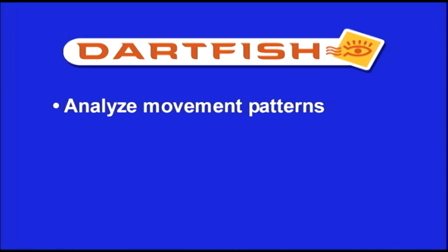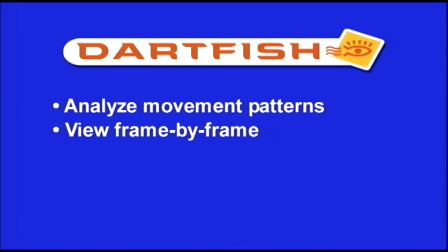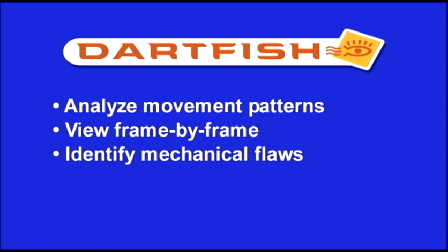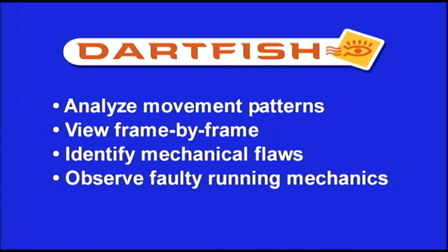This unique system allows our clinicians at JOI to analyze movement patterns performed in just about any sporting activity. By viewing high-speed movements at slower frame-by-frame speeds, we are able to see aberrant movements or mechanics that may be missed by the naked eye. It allows our clinicians to identify mechanical flaws that may result in injury or impede optimal sports performance. In this video, we will show some ways that we use Dartfish to observe faulty running mechanics.